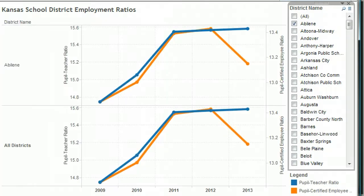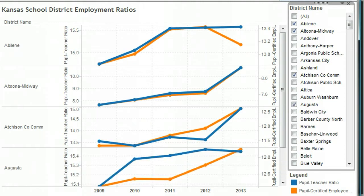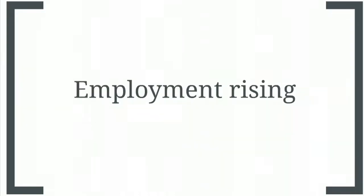Remember, you can use this visualization yourself at The Voice for Liberty, WichitaLiberty.org. When you hear complaints about large class sizes, remember that student-teacher ratio is not the same as average class size. The numbers show, however, that employment in Kansas schools is rising in both absolute numbers and ratios of employees to students, although it's not the same in all districts.